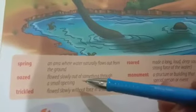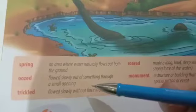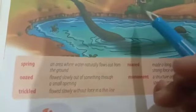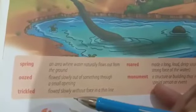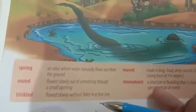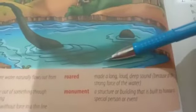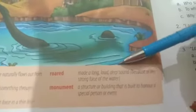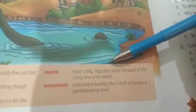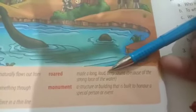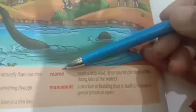Oozed — flowed slowly out of something through a small opening, flowing slowly without force in a thin line. Bina kisi force ke paani ka thiray dhiray behana. Roared — made a long loud deep sound because of the strong force of water; strong force ki wajah se jab water behata hai toh uske behne se flow hone se long loud deep sound aati hai.